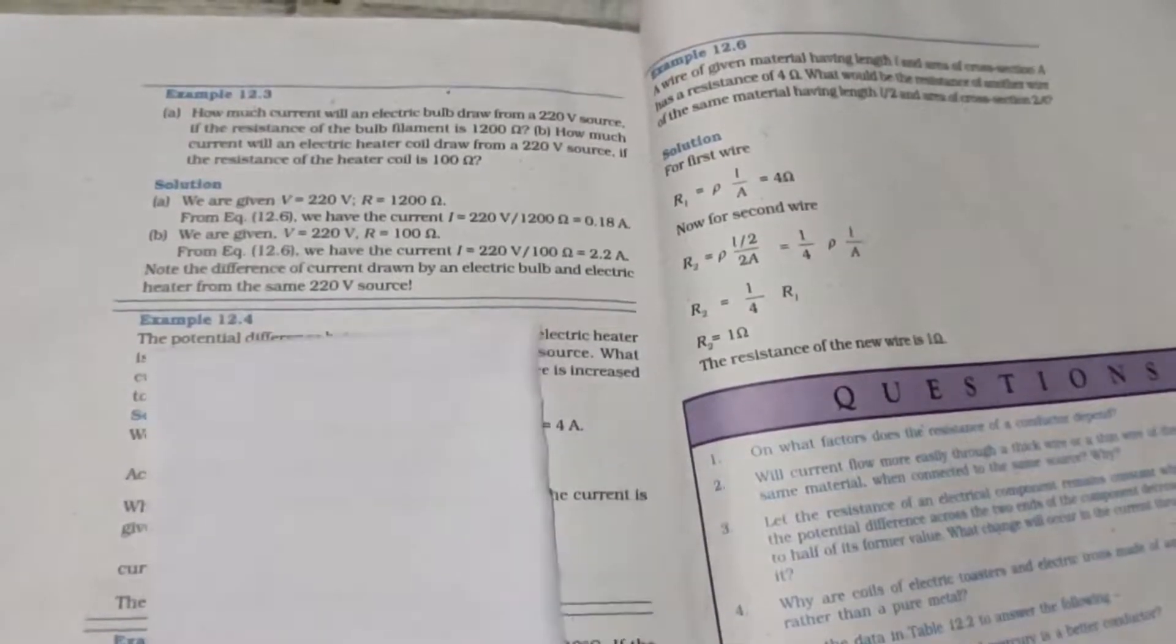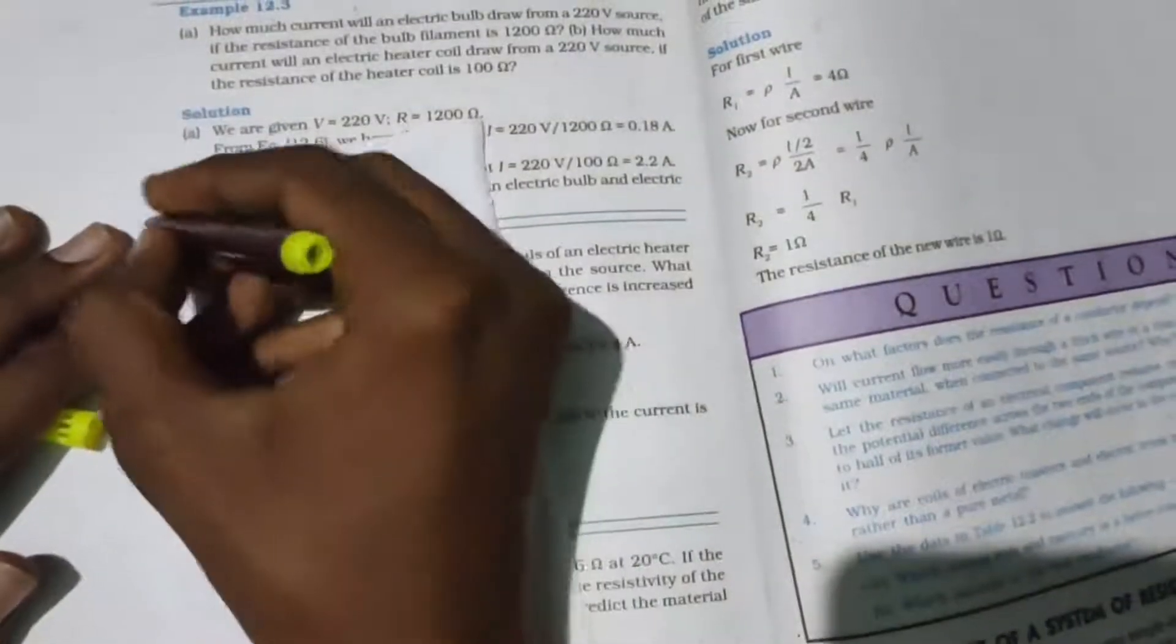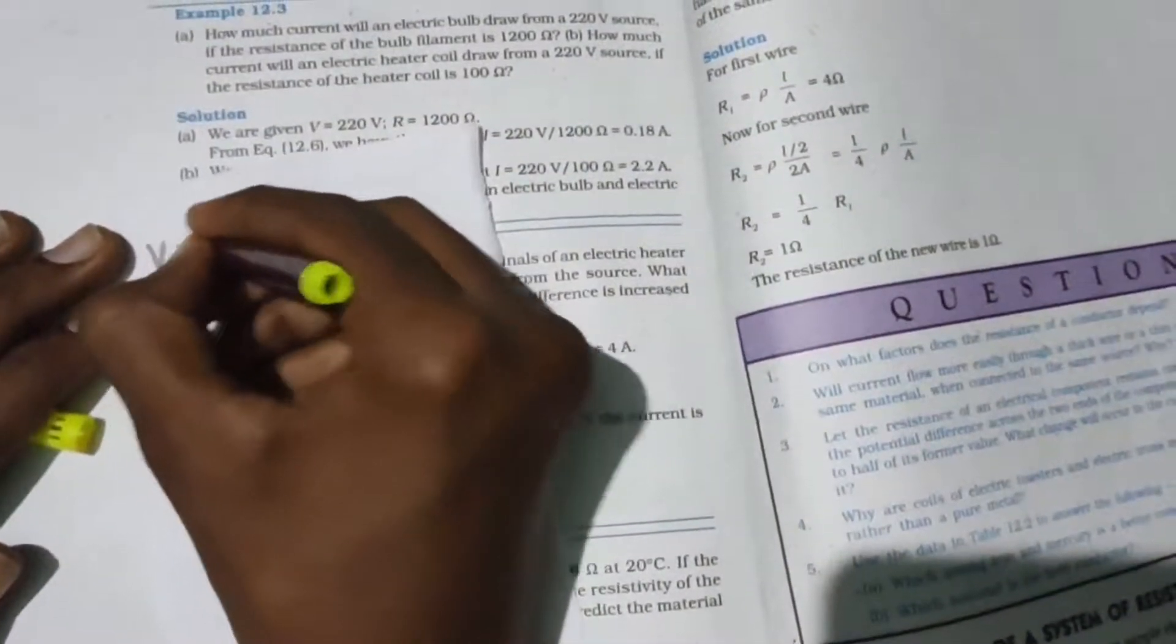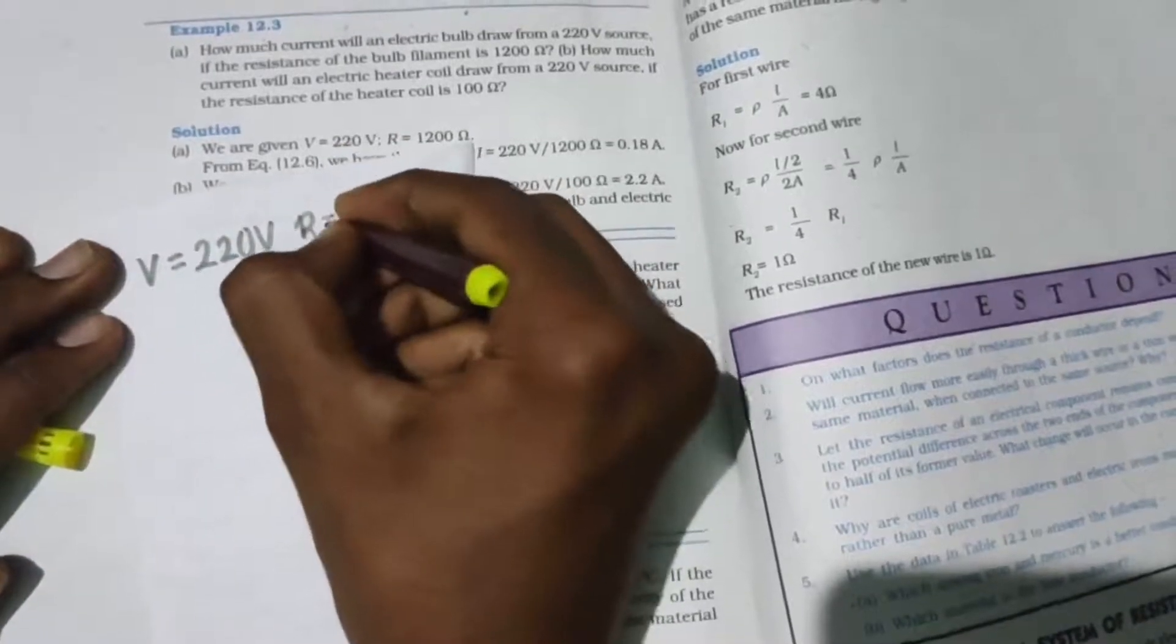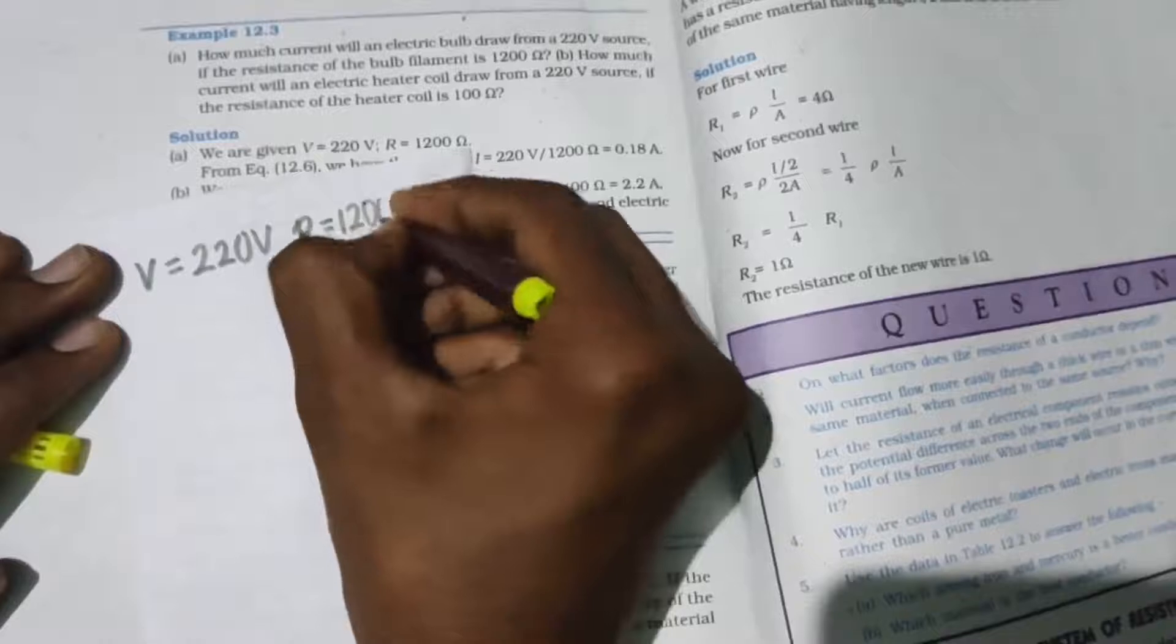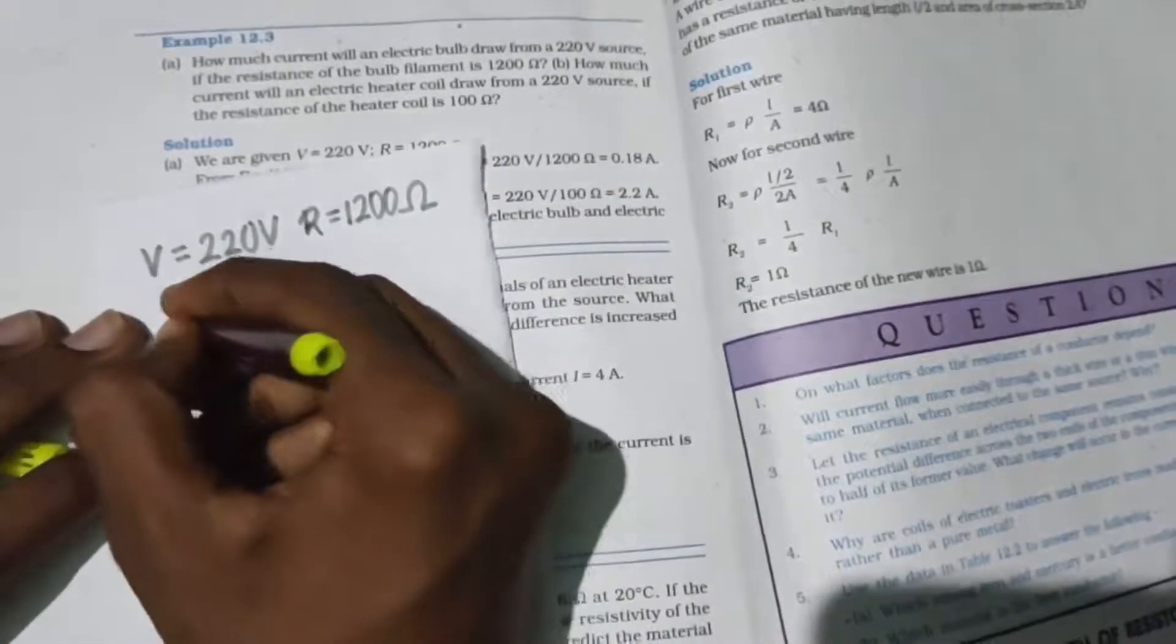Listen very carefully kids. In most questions, the given data is taken first. So write the given data, it's very important. First one: V = 220V. Then the resistance R = 1200 ohms.